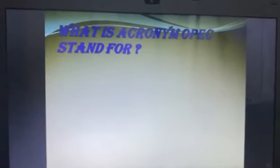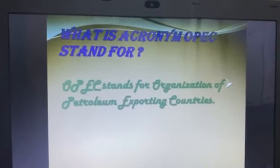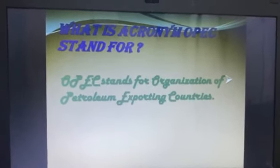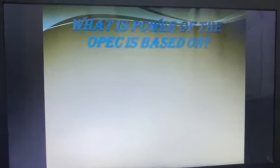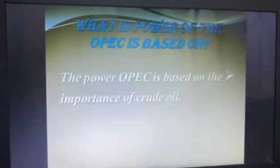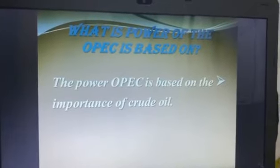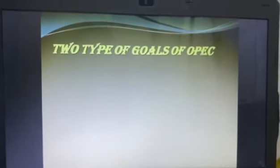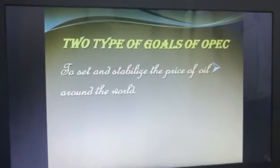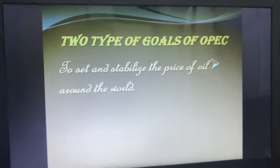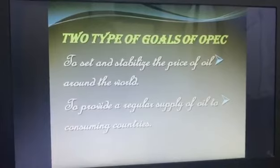What is the acronym OPEC stands for? OPEC stands for Organization of Petroleum Exporting Countries. What is the power of OPEC based on? The power of OPEC is based on the importance of crude oil. What are the two types of goals of OPEC? To set and stabilize the price of oil around the world, and to provide a regular supply of oil to consuming countries.